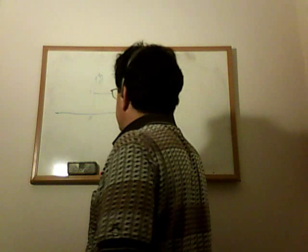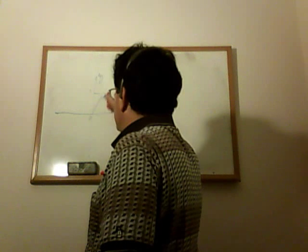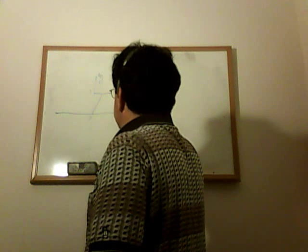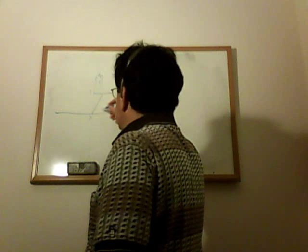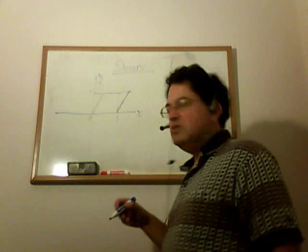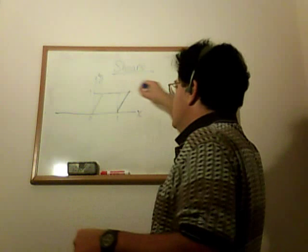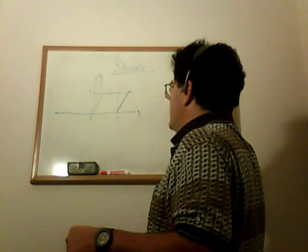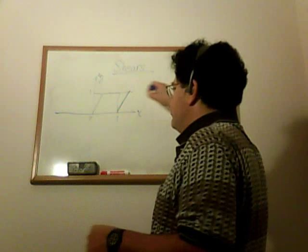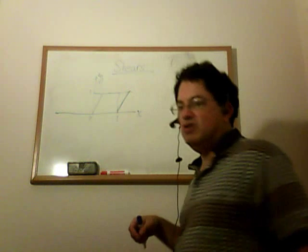is shear along the X direction will transform the rectangle into this parallelogram. So you can think of it as pulling the XY plane parallel, pulling lines in the XY plane parallel to the x-axis.